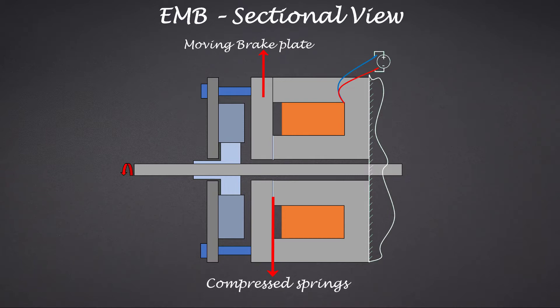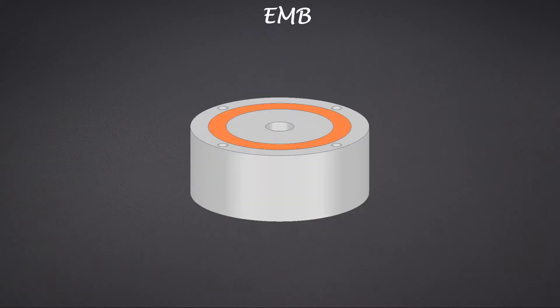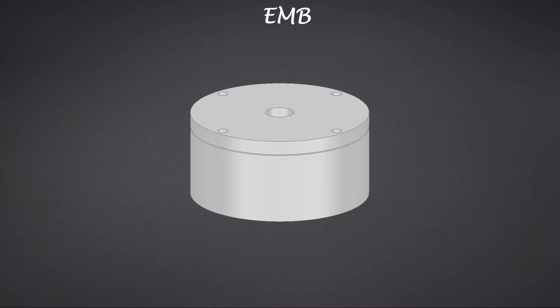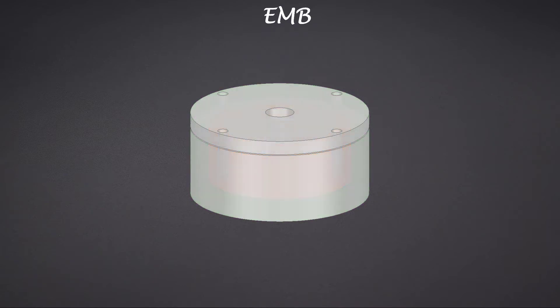It is enough to model the core, the coil, and the movable brake plate, since all the other parts are non-magnetic and are not needed for the EM simulation.